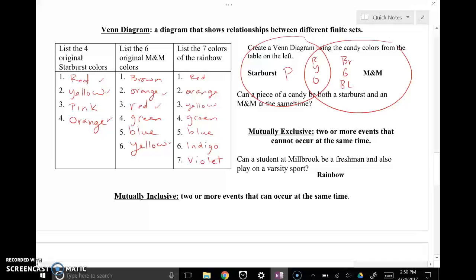Let's check out this question here. Can a piece of candy be both a Starburst and an M&M at the same time? No, but they could be the same color. So that's what's important. So it's not that they can be the same candy, but they could be the same color.